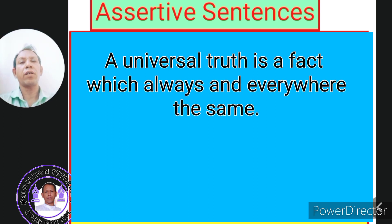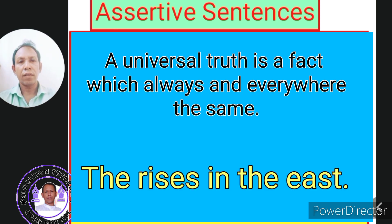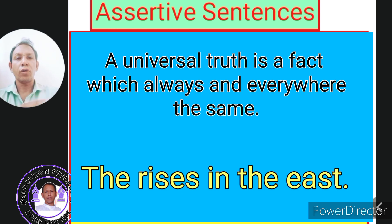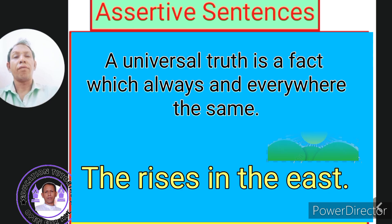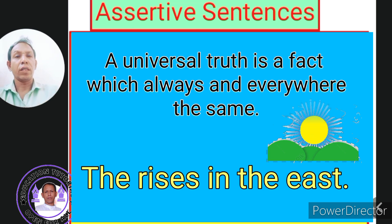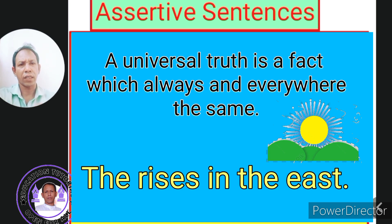For example, the fact of the sun rising in the east. Yesterday the sun rose in the east, today the sun rose in the east, and tomorrow also the sun will rise in the east — every time the fact is the same. Here in India the sun rises in the east; there in America, in Africa, everywhere in the world the sun rises in the east. A fact which is always and everywhere the same is a universal truth, and a universal truth is expressed in an assertive sentence.